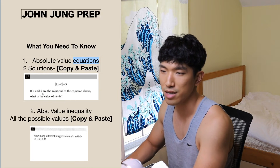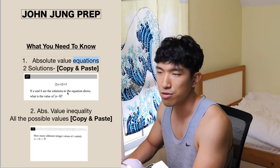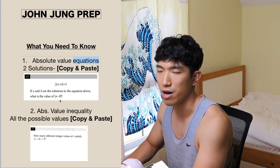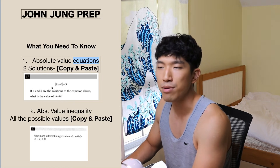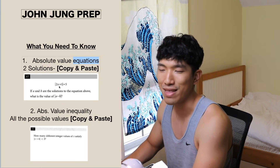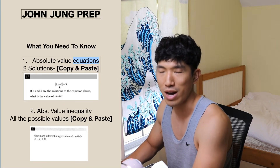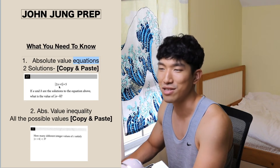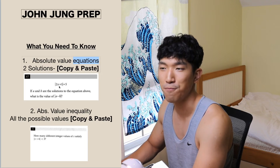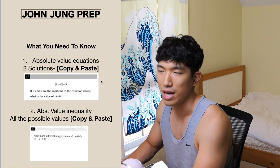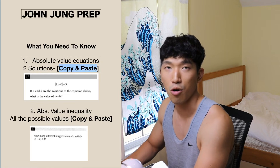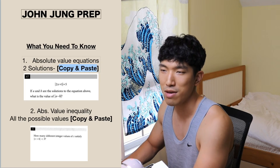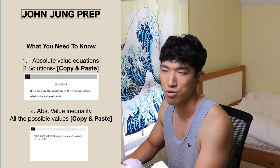Let's take a look at this question. If A and B are the solutions to the equation above, what's the value of A minus B in absolute value? What most people usually do is plug and chug different numbers and hope they come up with the right answer. The problem is that takes way too long, and on the SAT you don't have a second to waste. The solution is using a copy and paste method, which we're going to go over, and it lets you find the two solutions super quickly.